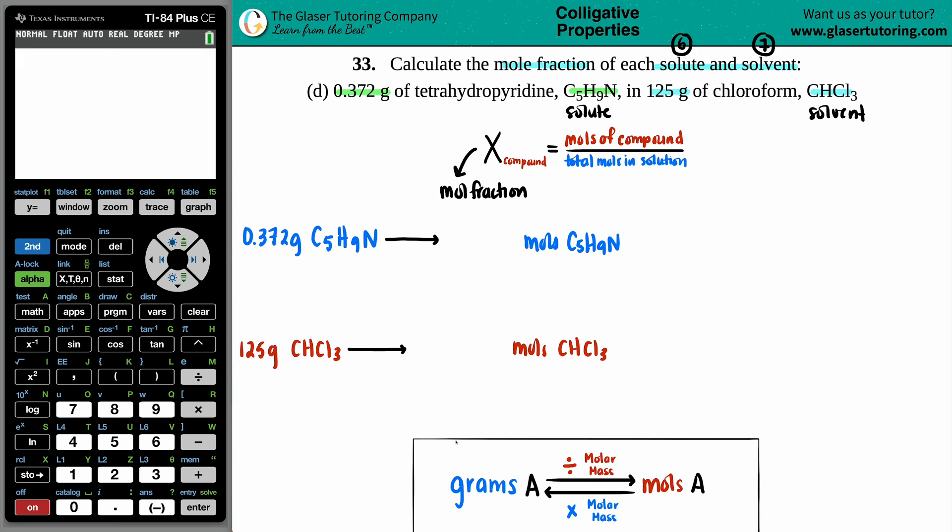Going from grams to moles, back to basics, back to the beginning of chem. If you have a gram of some substance and you want to go to moles, you always divide by the molar mass, which is found on the periodic table. So we're going to find the molar mass of C5H9N. You have five carbons, times 12.01, plus nine hydrogens, that's 1.008, and then I'm going to add the extra nitrogen, which is 14.01. So five times 12.01 plus nine times 1.008 plus 14.01. My molar mass is 83.132.